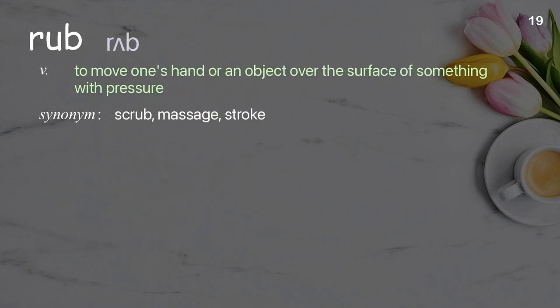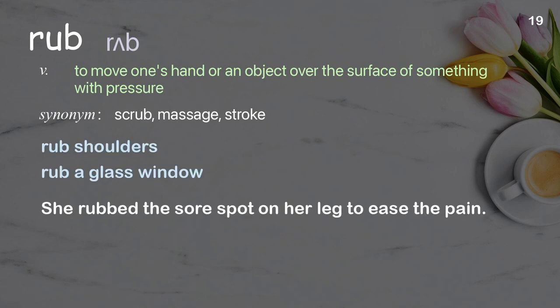Rub: To move one's hand or an object over the surface of something with pressure. Examples: Rub shoulders, rub a glass window. She rubbed the sore spot on her leg to ease the pain.